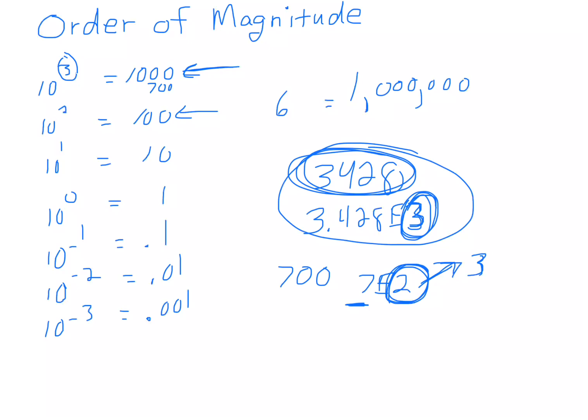So since 7 is greater than 5, we're going to say that the order of magnitude of 700 is actually a 3, which does make sense. It's closer to 1,000.